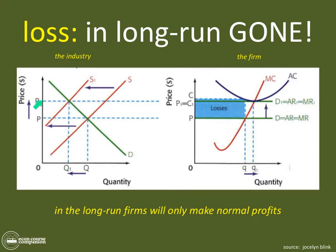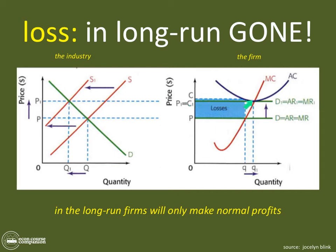Since firms are price takers, they must adjust their price — they have no choice. The demand curve, average revenue curve, and marginal revenue curve — because they are the same curve — are forced to shift upward, since the curve is perfectly elastic in perfect competition. As a result of firms leaving, we get a new price, and look what happens: the firms that were able to stick around end up making normal profits.